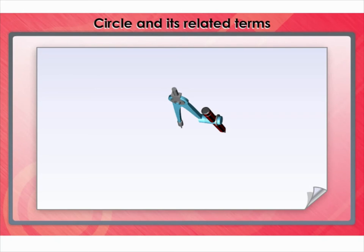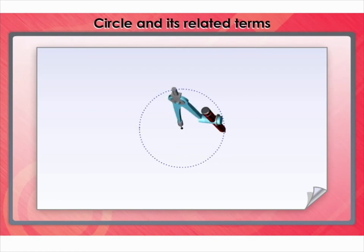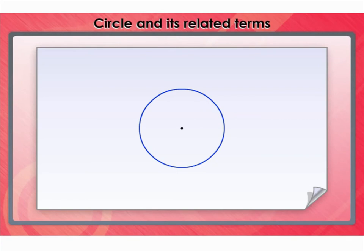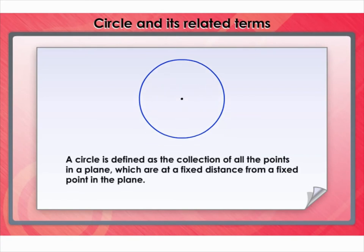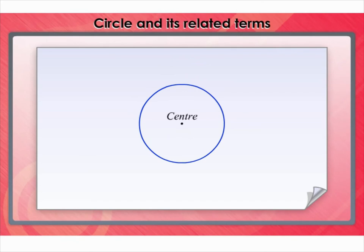Now let's review circles and its related terms. Take paper, compass, and pencil. Fix a pencil in the compass. Put its pointed leg on a point on a sheet of paper. Open the other leg to some distance. Keeping the pointed leg on the same point, rotate the other leg through one revolution. This forms a circle. You kept one point fixed at A and drew all the points that were at a fixed distance from A. Using this depiction, we define a circle as the collection of all the points in a plane which are at a fixed distance from a fixed point in the plane. The fixed point is called the center of the circle and the fixed distance is called the radius of the circle. The line segment joining the center and any point on the circle is also called a radius of the circle.